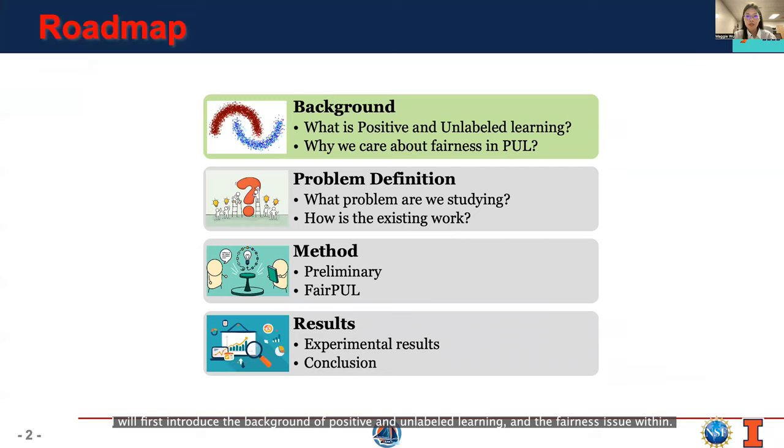This presentation will be organized into four sections. I will first introduce the background of positive and unlabeled learning and the fairness issue within. Then, I will clarify the problem definition and introduce our proposed method. Finally, I will show our experimental results and make a conclusion.